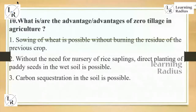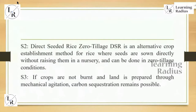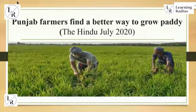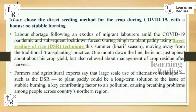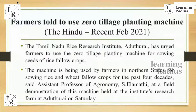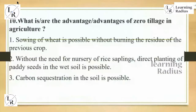What are the advantages of zero tillage in agriculture? Options include: sowing of wheat is possible without burning the residue of the previous crop, without the need for nursery of rice saplings direct planting of paddy seeds in wet soil is possible, and carbon sequestration in the soil is possible. Zero tillage means directly going for agriculture without preparing the soil. In July 2020, there was a discussion: 'Farmers find a better way to grow paddy' — many chose the direct seeding method during COVID-19 with the bonus of no stubble burning. In February 2021, there was an article: 'Farmers told to use zero tillage planting machine.' UPSC asked the advantage of zero tillage well in advance.